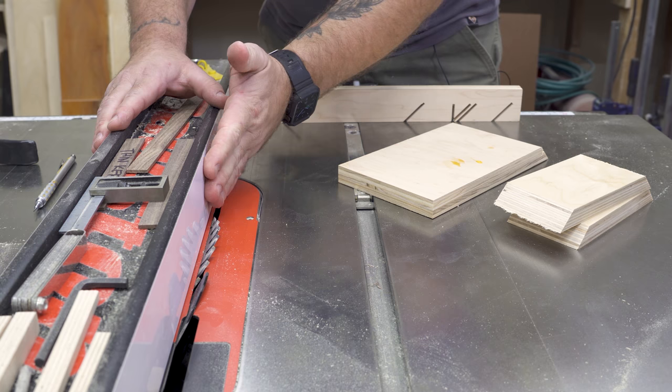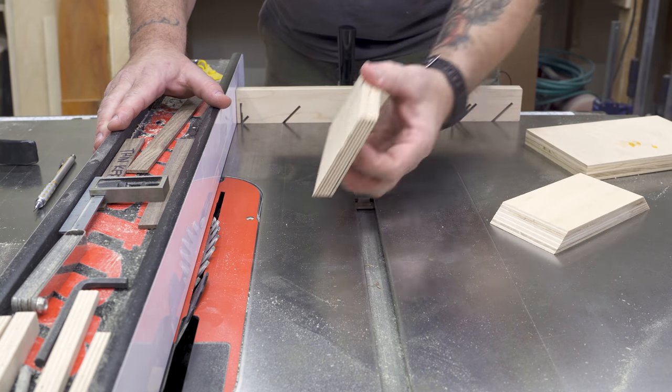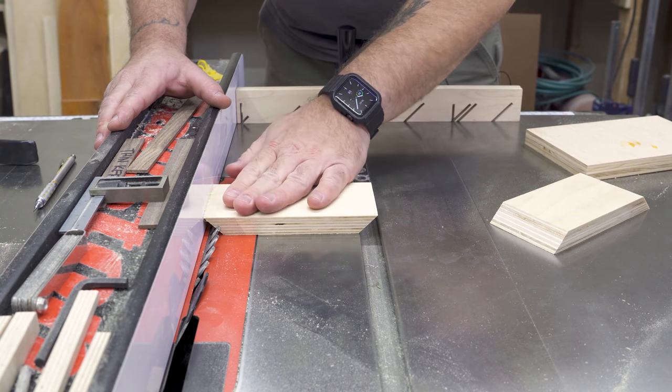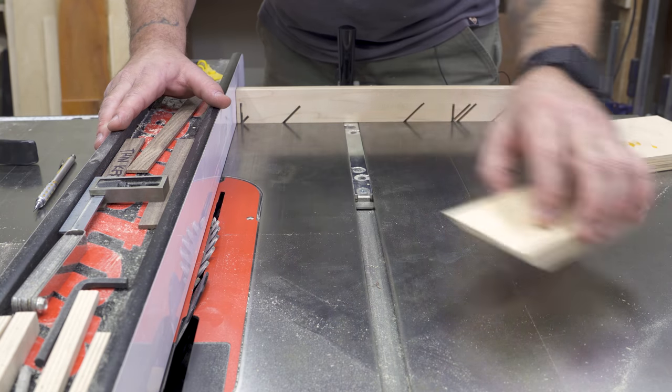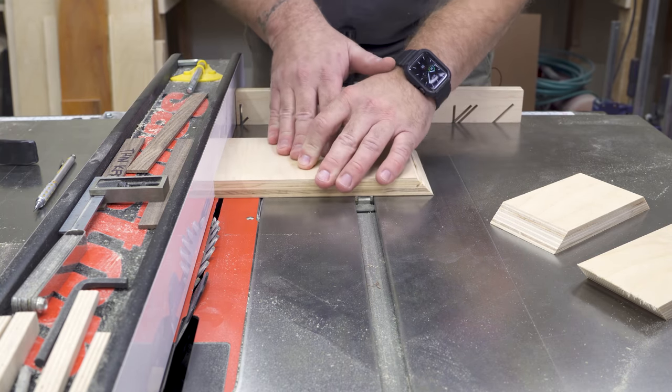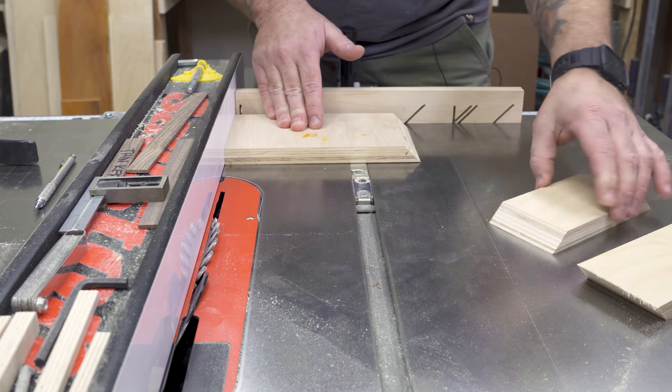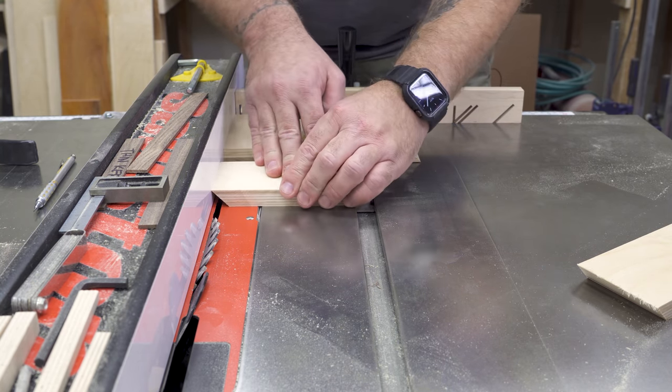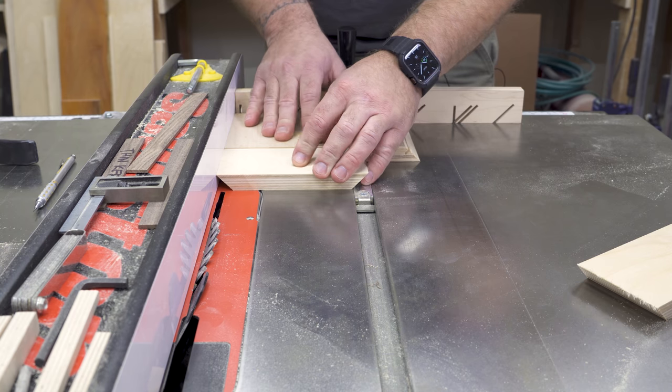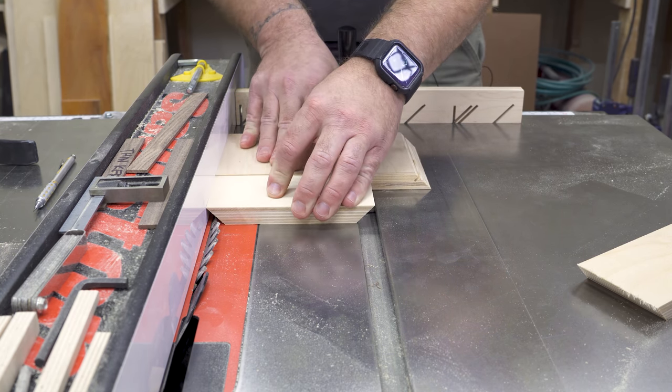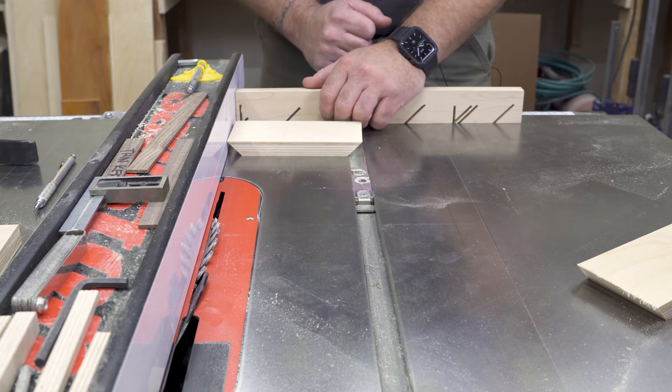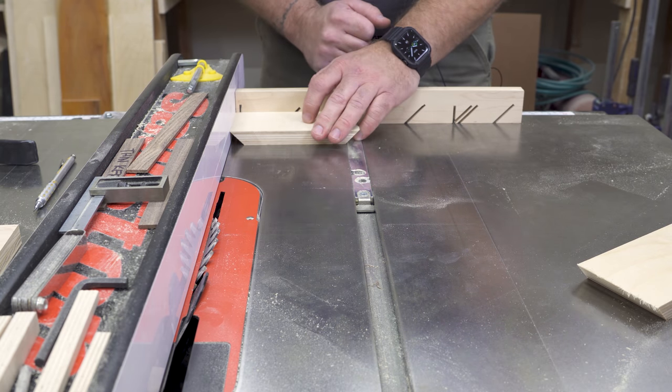With my blade height determined and the distance from my fence determined, I'm ready to run these through. It wouldn't matter if I was using half inch, three quarter inch. This is going to work the same no matter the thickness of our material. If we were dealing with a really wide board like this, we could get away with just holding it against the fence and running it through. If you're dealing with something more narrow, there's two things we can do. We can just use another block to push, similar to what we would do on a router table. I'm pushing this against the fence.